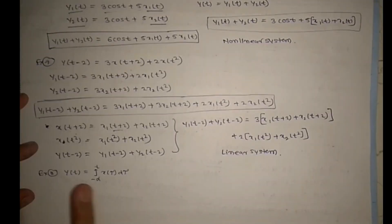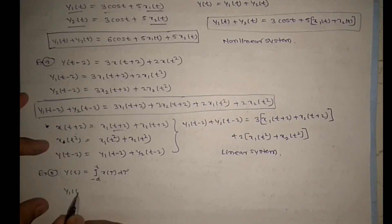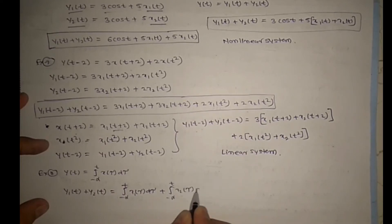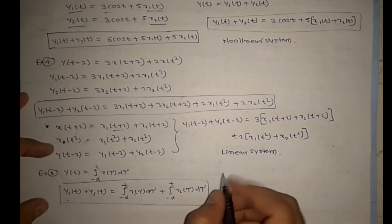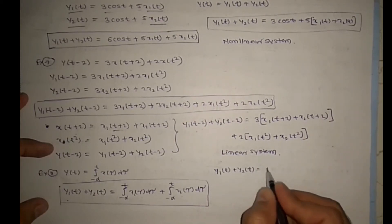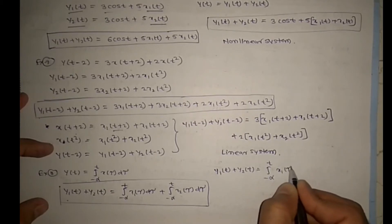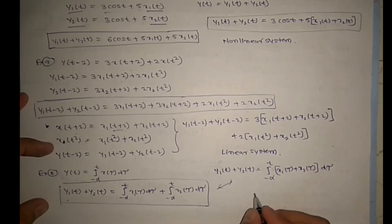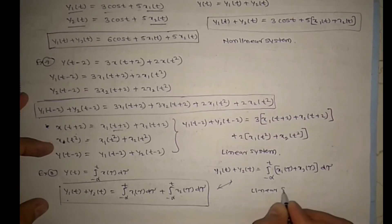Example 8: Y(t) = integral from -∞ to t of X(τ)dτ. Writing Y1(t)+Y2(t) = integral of X1(τ)dτ + integral of X2(τ)dτ. Step 2: replacing input with X1(τ)+X2(τ) gives integral of (X1(τ)+X2(τ))dτ, which equals the sum of the two integrals. Both equations are the same, so it is a linear system.